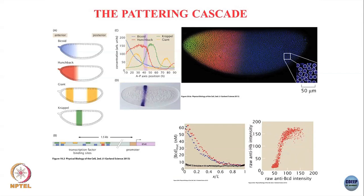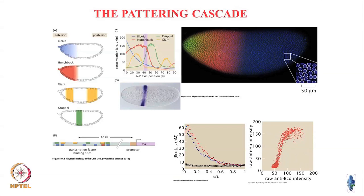The idea is that once you have set in this bicoid gradient, all of these other proteins respond to it and express in a particular way so as to give these spatial patterns. In response to these spatial patterns of the downstream genes - hunchback, giant, krüppel - you will get different parts of the fly body developing into different organs. Some will be abdomen, some will be wings, some will be head, and so on. There is this patterning cascade. It is an extremely complicated process, but the basic idea is that once the bicoid has set in, it controls all subsequent developmental processes.